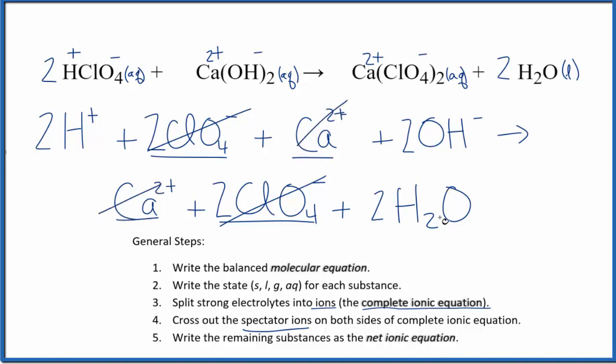And this is the net ionic equation. We have 2H+, we have 2OH minus, and we have 2H2O. So let's clean that up and write it out again.